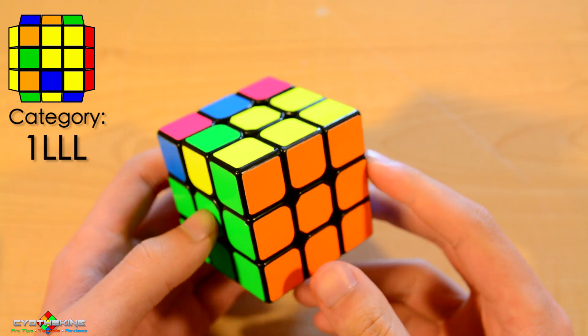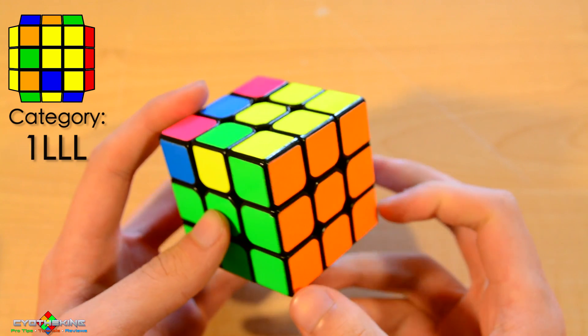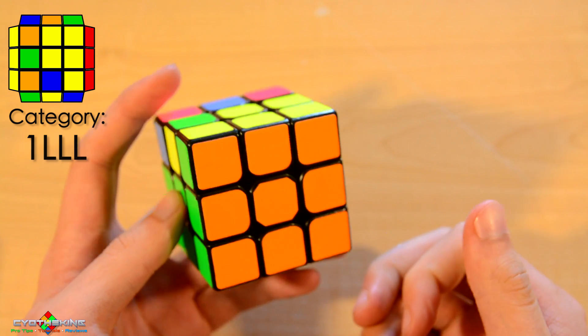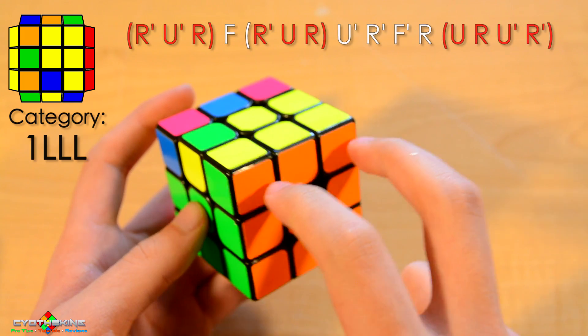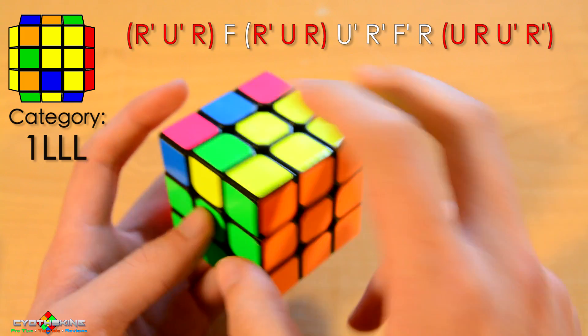So for this week's algorithm of the week, we have this one-look last layer case that's really easy to recognize. If you know how to recognize CP, you can see that it's the double bar U case.